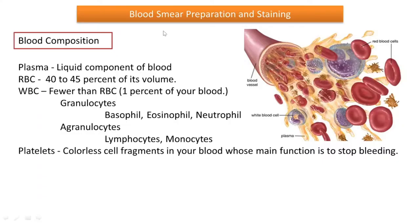Good morning dear students. Today we are going to do another practical — the preparation of a blood smear to observe different types of WBC. First we need to understand what is the composition of blood. Blood is mainly composed of plasma, which is the liquid portion of the blood that helps to circulate all the components present in the blood to all other parts of the body.